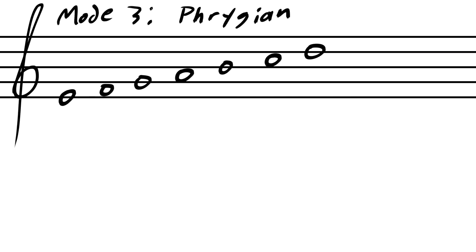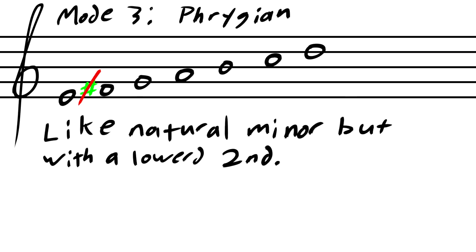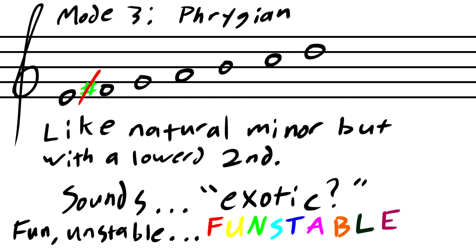The next mode is the third, Phrygian. This is like a minor scale, but with a lowered second. It's often described as exotic, I suppose. It's fun and unstable.